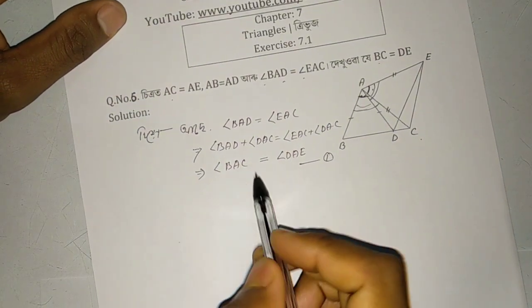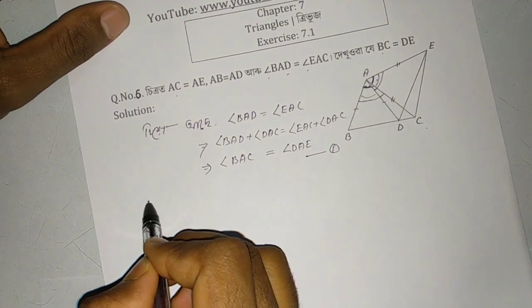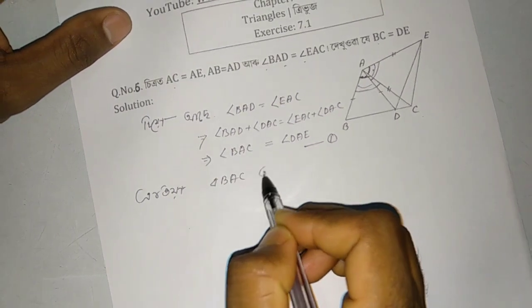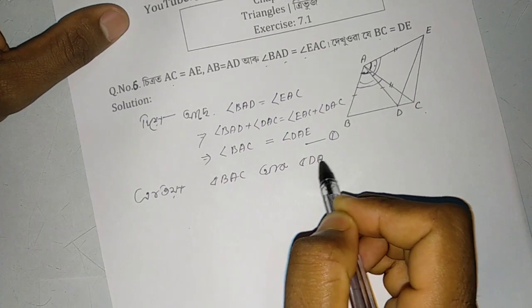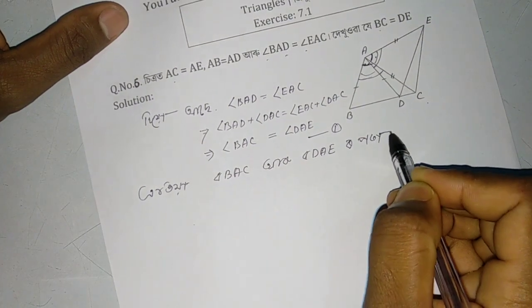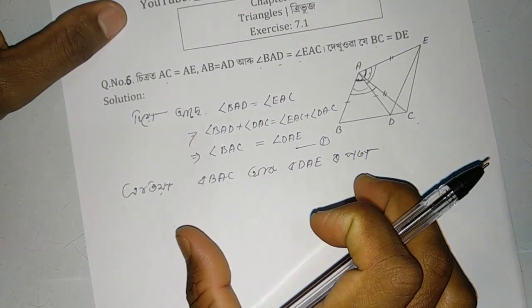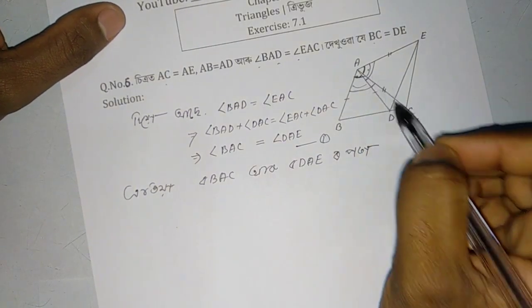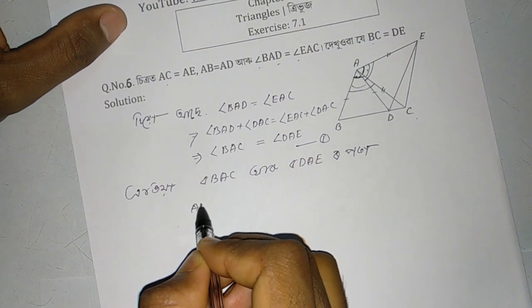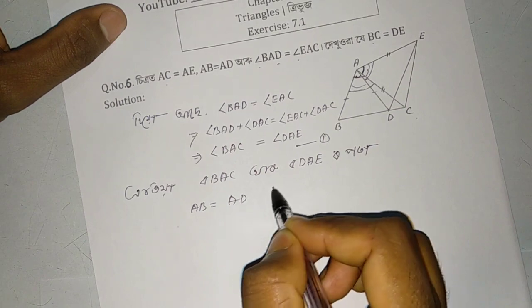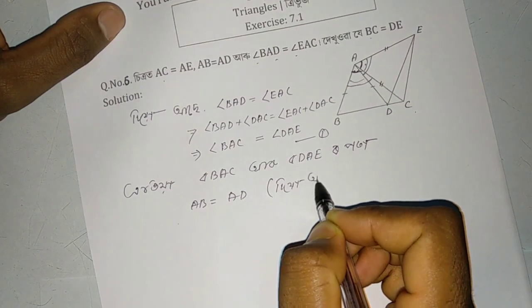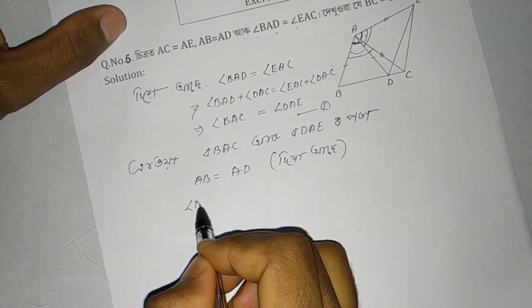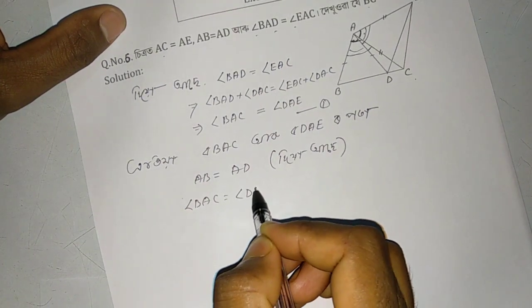And EAC and DAC equal to DAE. Therefore angle BAC equal to angle DAE.